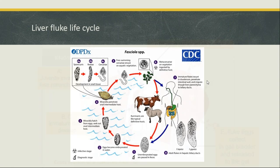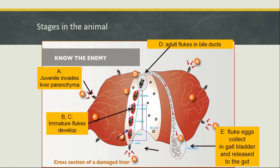Once the metacercaria has been ingested by the animal, it goes down into the digestive tract. When it passes into the small intestine, it knows the liver is nearby. The fluke punches through the duodenum, makes a hole in the liver, and migrates through — like little machetes, slicing their way through, eating and causing a lot of hemorrhaging and scarring. They're trying to get into the bile ducts, which run through the liver like finger-like tubes.